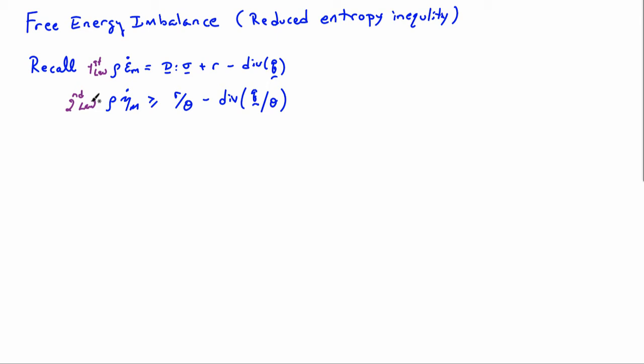So again, rho is the density. Epsilon M is the internal energy density per unit mass. And eta M is the internal or the entropy per unit mass. Entropy density, I guess.